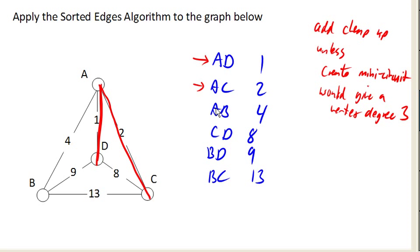Next up on our list is A to B. What would happen if I add AB? Notice now we have a degree 3 vertex, and that is bad. So we're not going to add that one because it violates our rules here. So let's go on to the next one.